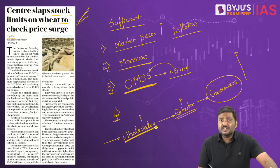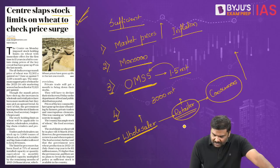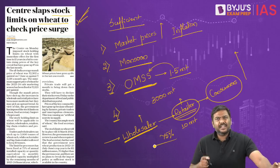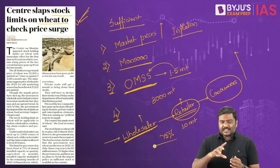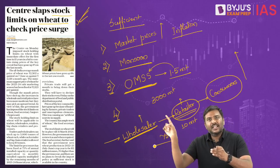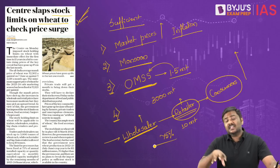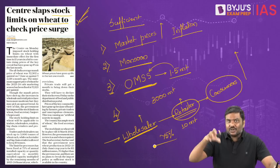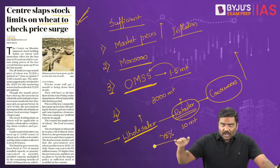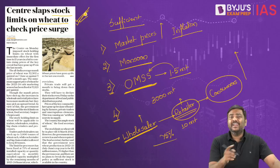To prevent hoarding, the Government imposes stock limits on market participants. For example, if you are a wholesaler, the stock limit is 3,000 metric tons; if you are a retailer, it is 10 metric tons; and if you are a food processor, the limit is 75% of installed capacity. On a weekly basis, these participants must declare the amount of stock they are holding. The objective is that intermediaries will not be able to hoard crops, automatically increasing supply and cooling market prices of wheat.